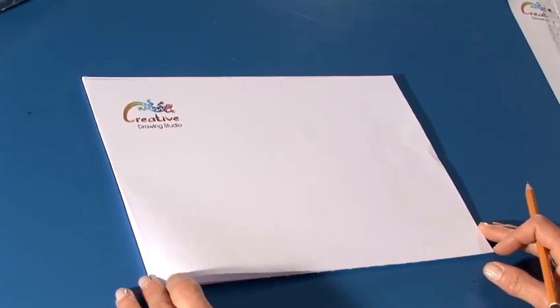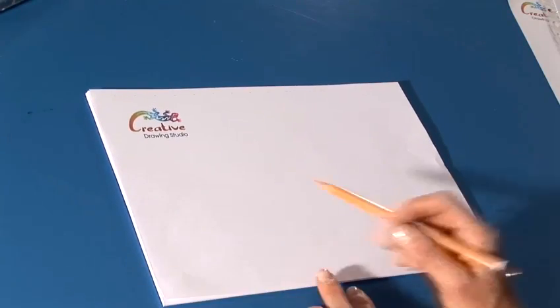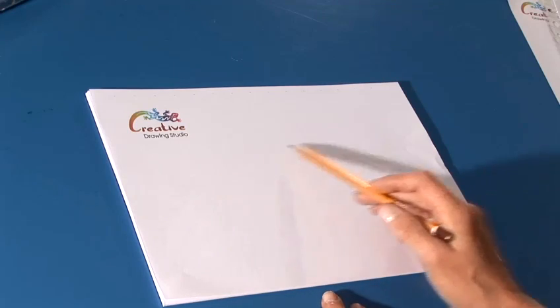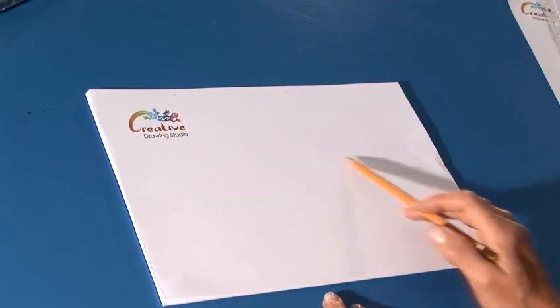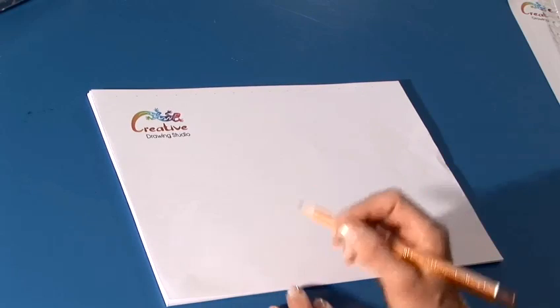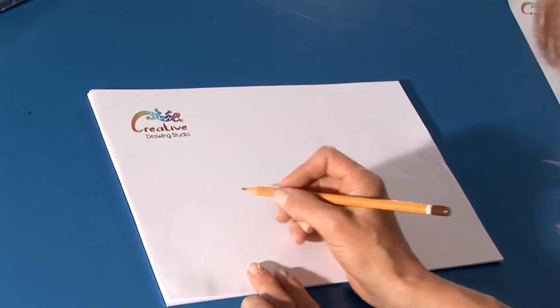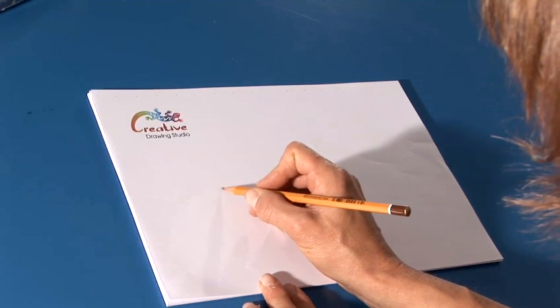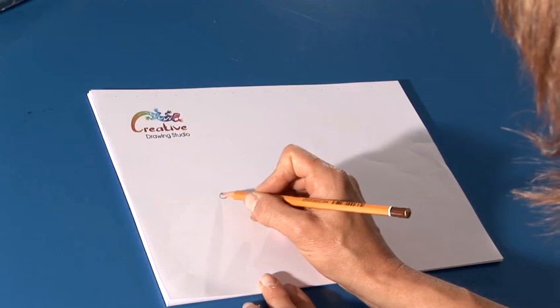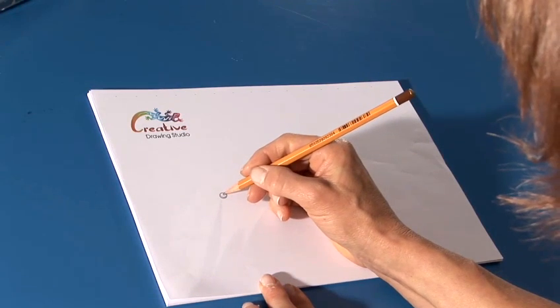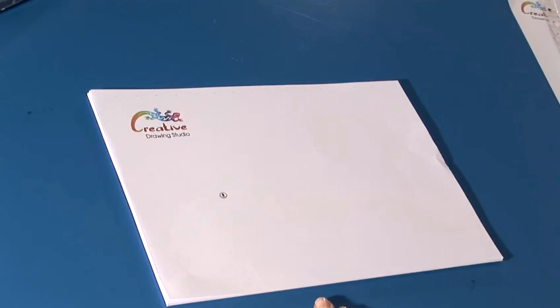We're going to draw a lizard and first the general shape of the lizard will go on the page this way with the head on this side. So first we'll start with an eye and we'll just draw a little circle around here and inside we'll draw a squashy dot like this.